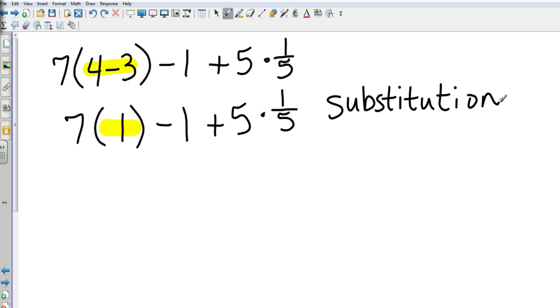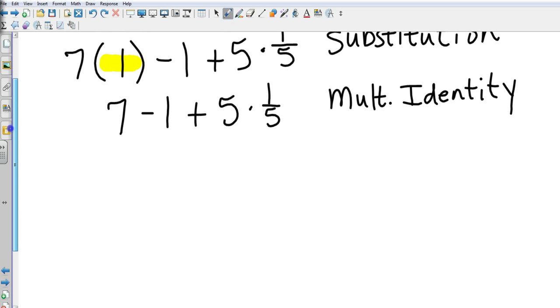Okay. So my next step is I'm going to do multiplication because I have a seven times one here, and I have a five times one-fifth. So let's go left to right. Seven times one is seven. All right. Now whenever I multiply anything by one, that is the multiplicative identity. I multiplied something by one, and it didn't change its value. So that's multiplicative identity.